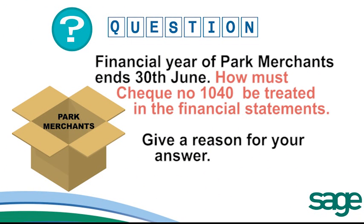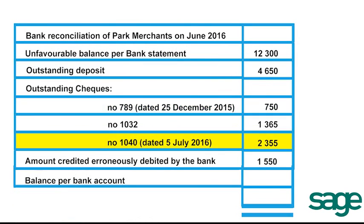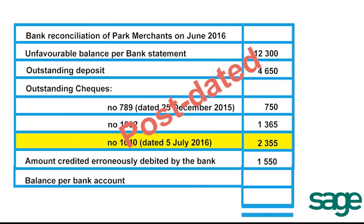For our next question, we're told that the financial year of Park Merchants ends on the 30th of June annually. We're asked how check number 1040 would be treated in the financial statements, and you need to give a reason for your answer. Remember, pay attention to the dates on the checks. You should notice that check 1040 is dated for the 5th of July, so that makes it a post-dated check going from one financial year into the next financial year.